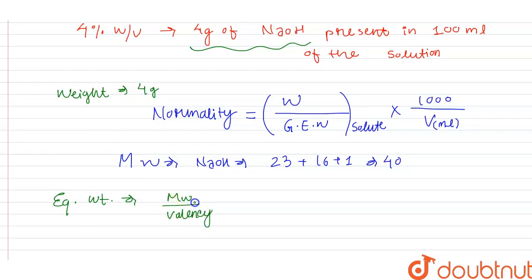As we know that sodium hydroxide can be dissociated like this: NaOH becomes Na+ plus OH-. So valence for this will be 1.